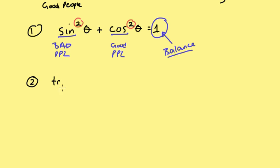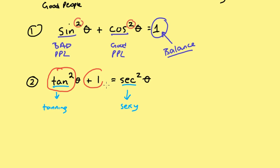Moving on to identity number two in our list: tangent squared of theta plus one equals secant squared of theta. We said that tan is literally tanning, like tanning in the Sun, and secant we said that was sexy. How do I remember this function? A person who tans at least once in the summer is gonna look sexy for the season, so tanning at least once, this plus one, equals sexy.